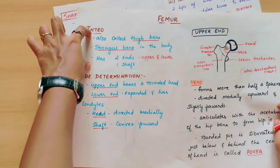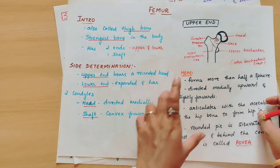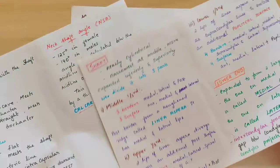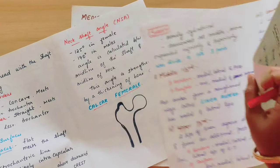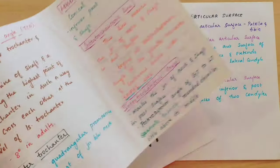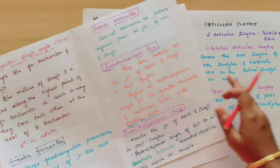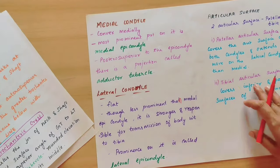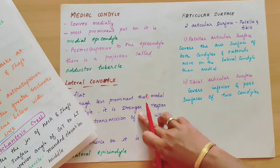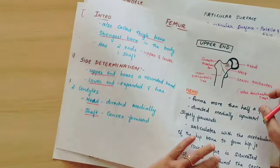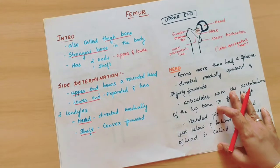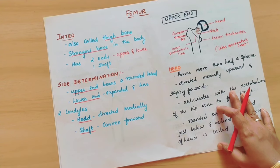In this video, we have seen the introduction of the femur, the side determination, the upper end including the head, neck, greater trochanter, lesser trochanter, intertrochanteric line and crest, the shaft divided into upper, middle, and lower thirds, and the lower end including the medial and lateral condyles and epicondyles and the articular surface. In the next video, we will see the muscle attachments of the femur and the clinical anatomy. Thank you for watching — please let me know any doubts or suggestions in the comment section below.